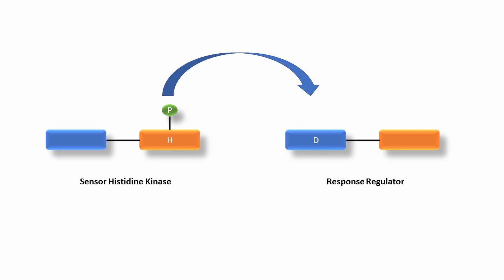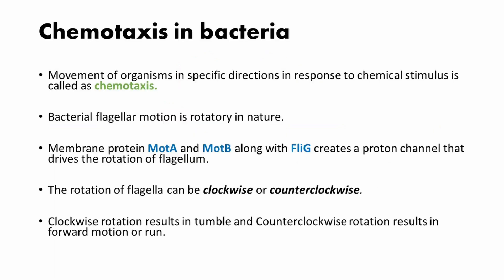This activates the effector domain, and the usual end target of the two-component pathway is the regulation of gene transcription. So that is the basics of the two-component signaling system. Now let's see what chemotaxis in bacteria is.